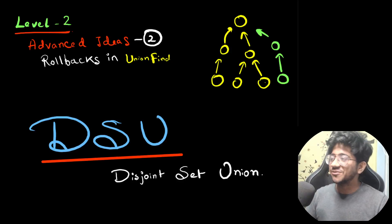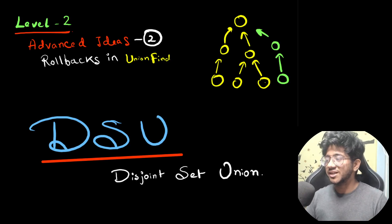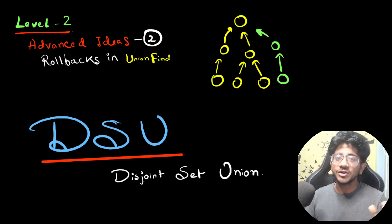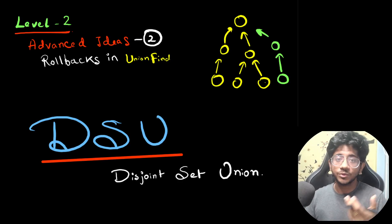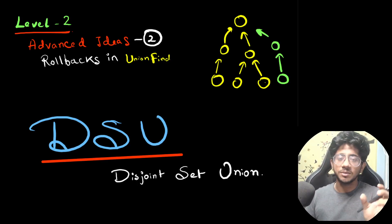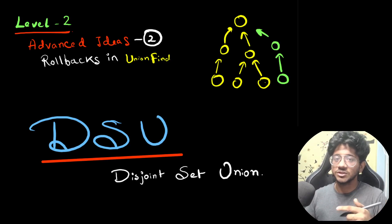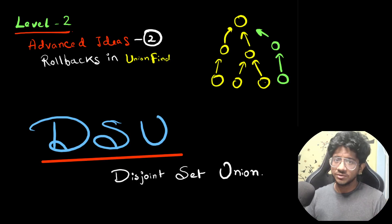Hi everyone, this is Vivek and welcome to this video on rollbacks on union find. This is the second video of the advanced ideas DSU series. If you haven't checked out the previous videos, there is a basic video on union find covering what union finds and DSUs are all about. In this advanced series we're talking about three different ideas, and the second one we're covering right now is rollbacks. The previous video is on weighted union find, so check that out if you haven't done that.